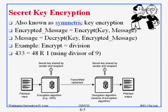How does the recipient have the same key in the first place? That's a tough one - that is why we have the next course, 571, where we teach you how the recipient gets the key. But assuming we have the key, we can use it to encrypt. It is symmetric because we use the same key to encrypt from plaintext to ciphertext, and the same key to decrypt.